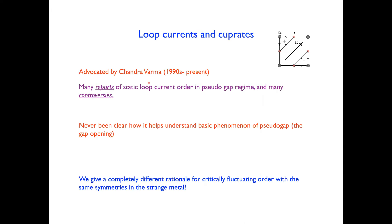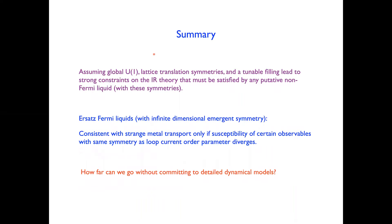Loop currents have a very complicated history in the cuprate literature. They've been advocated by Varma for a long time, and there are many reports of static loop current order in the pseudogap regime, along with an equal number of papers that contradict those reports. We now have a completely different rationale for critically fluctuating order with the same symmetries as loop current order in the strange metal — perhaps it's there for reasons different from what Varma was thinking about.